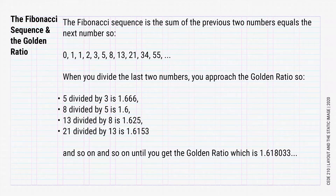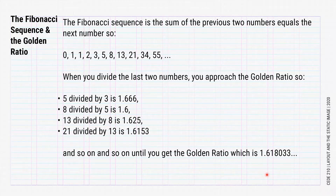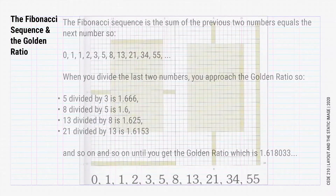Just a reminder of the Fibonacci sequence: the Fibonacci sequence is the sum of the two previous numbers equaling the next number. So 0, 0 plus 1 is 1, 1 plus 1 is 2, 2 plus 3 is 5, 3 plus 5 is 8, then we get 13, 21, then 34. When you divide the last two numbers, you begin to approach the golden ratio. So 5 divided by 3 is 1.666, 8 divided by 5 is 1.6, 13 divided by 8 is 1.625, 21 divided by 13 is 1.6153, and so on until you get something closer to the golden ratio, which is 1.618033 and so on.